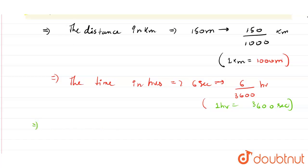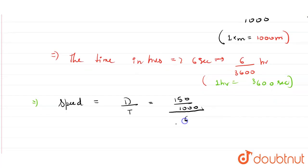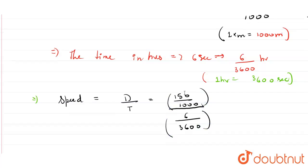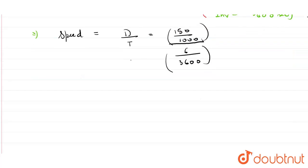So from here we can say that speed equals distance divided by time. Distance is 150 divided by 1000, and time is 6 divided by 3600. The 6 over 3600 goes to the numerator as its reciprocal, so we get 150 divided by 1000, multiplied by 3600 divided by 6.